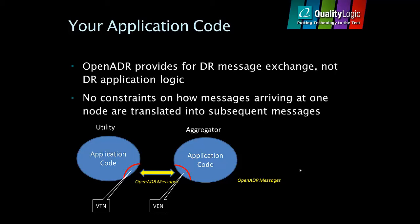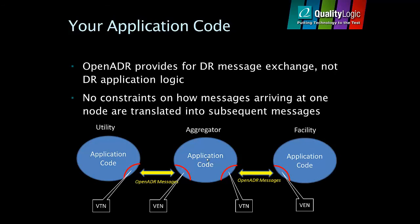For instance, an operator at the console of a demand-response management system at the utility may initiate an event. The details of the event get packaged into an XML payload and shipped via OpenADR messages from the utility to the aggregator. At the aggregator, the message is unpacked and the details of the demand-response event are pushed up into the aggregator's application, which will decide how to propagate the information downstream. The process repeats itself as the message is sent from the aggregator to the facility. The job of OpenADR is to deliver the message, not to decide what to do with it.